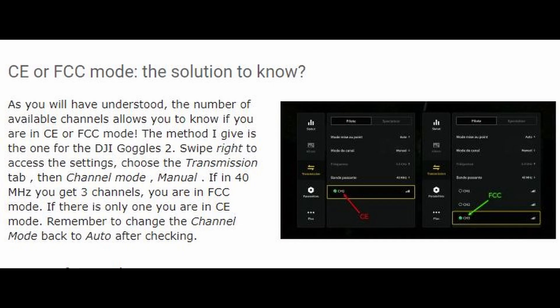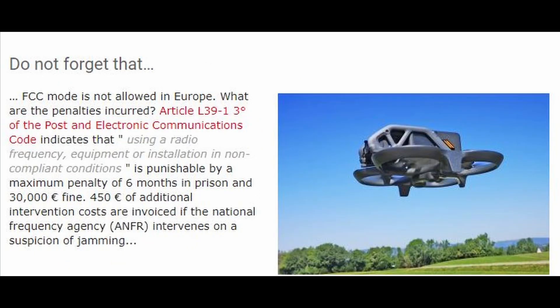CE or FCC mode — the solution to know. As you will have understood, the number of available channels allows you to determine if you are in CE or FCC mode. The method shown here is for the DJI Goggles 2. Swipe right to access the settings, choose the transmission tab, then set channel mode to manual. If in 40 MHz you get 3 channels, you are in FCC mode. If there is only one, you are in CE mode. Remember to change the channel mode back to auto after checking. Do not forget that FCC mode is not allowed in Europe.